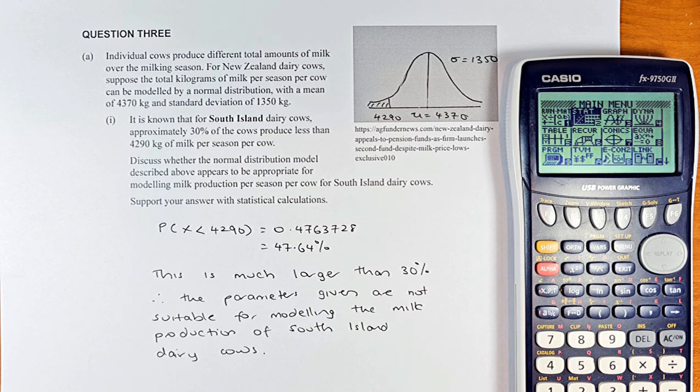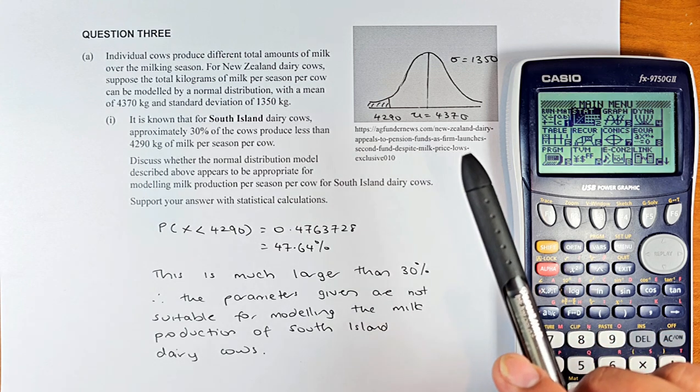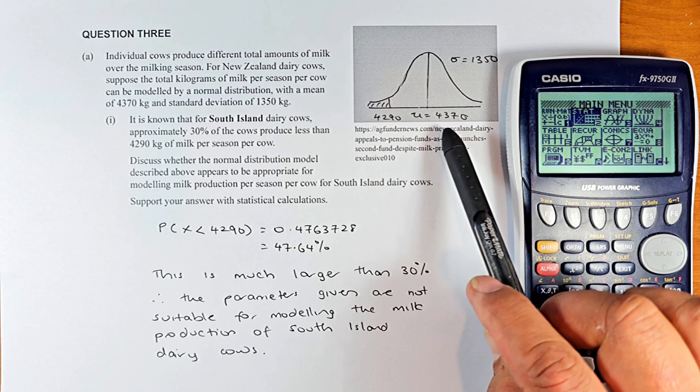So the question is, individual cows produce different amounts of milk over the milking season. For New Zealand dairy cows, suppose the total milk per season per cow can be modeled by a normal distribution with a mean of 4,370 kg and a standard deviation of 1,350 kg. So we're going to draw the graph. So the mean in the middle here, 4,370 kg and the standard deviation is 1,350 kg.